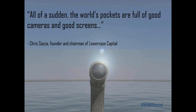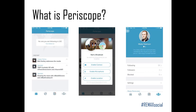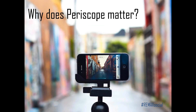Periscope is a live broadcasting app owned by Twitter. The app allows you to record video in real time to a live audience. The audience can comment on and like videos, and as you record you can see on your screen what people are saying in real time. In the bottom right-hand corner you can see how many people are viewing your live broadcast. You can follow people on Periscope and have followers — similar to Twitter — and Periscope will always show you on your home screen whether anyone you follow is currently broadcasting live.